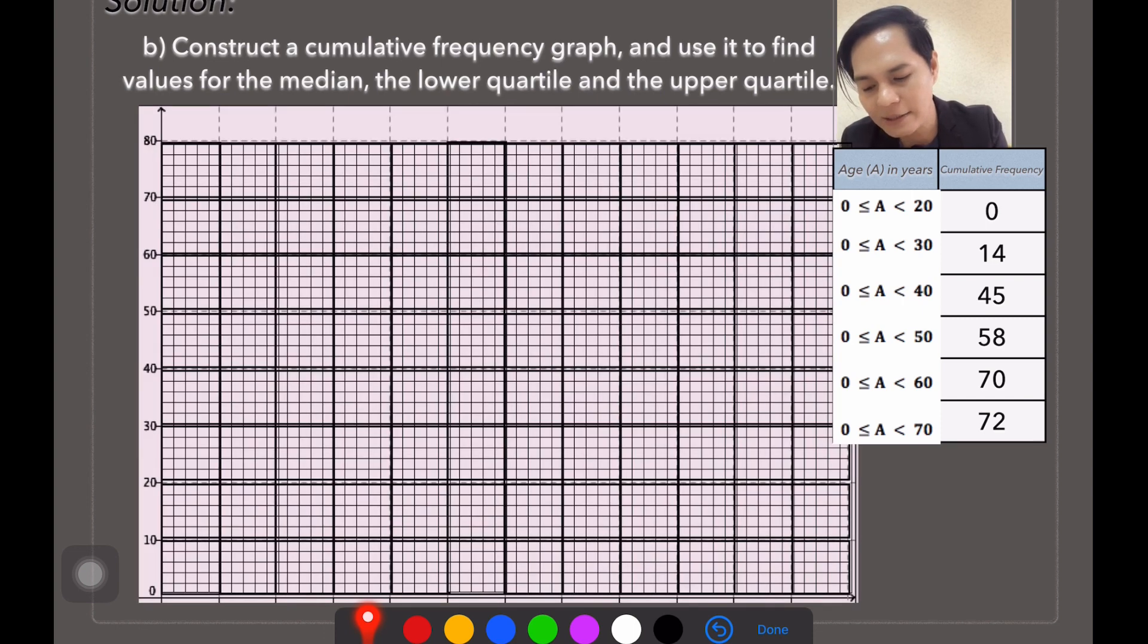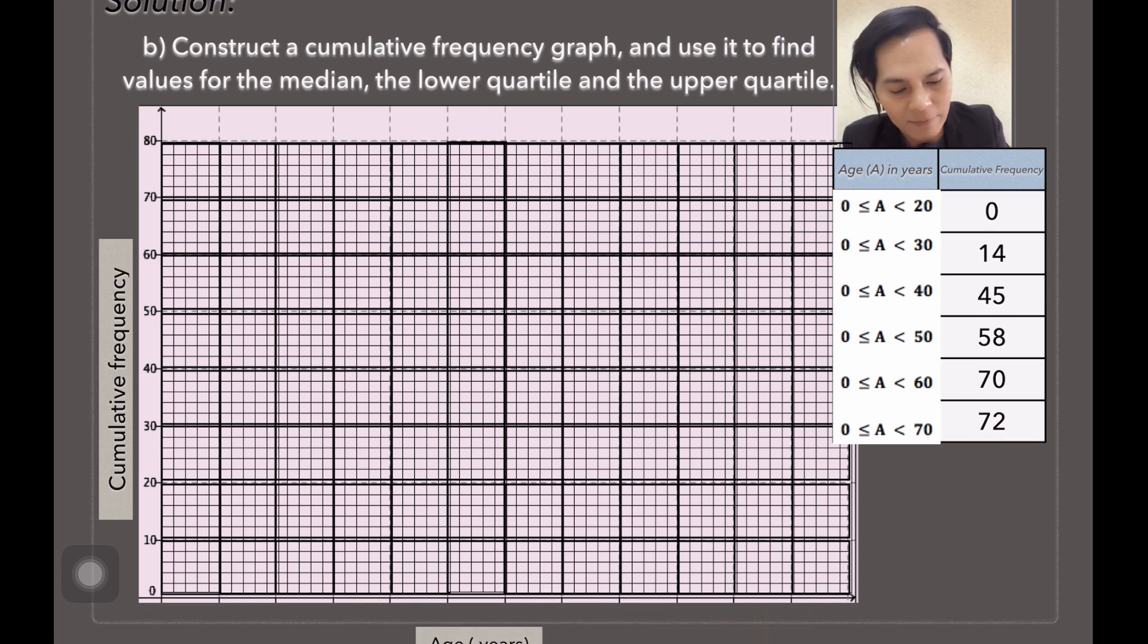...the y-axis is the cumulative frequency with 80 as the highest, and the x-axis is the age in years with 70 as the highest. So look at here, how I constructed the graph, how I divided them accordingly. It's very important to present it well.